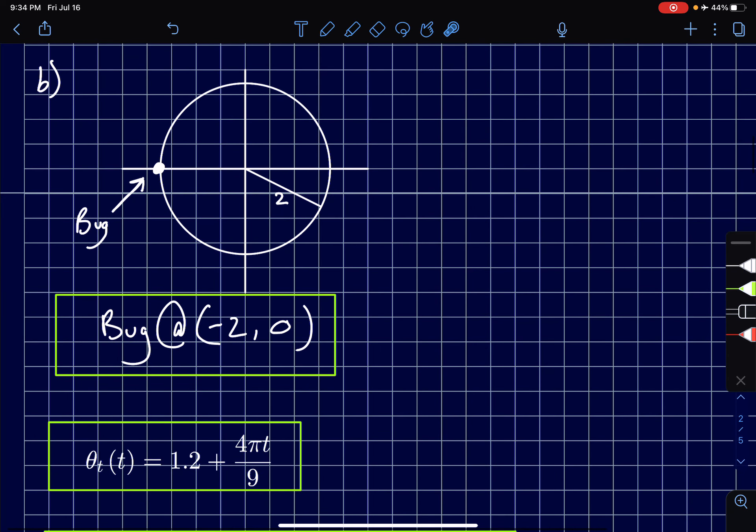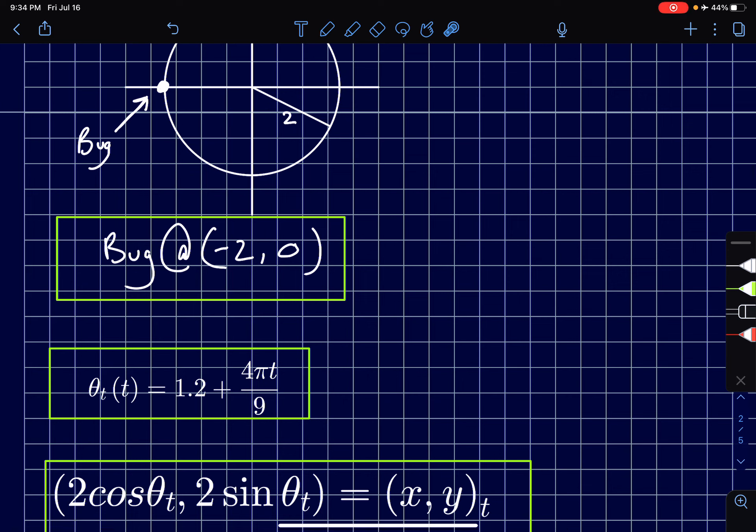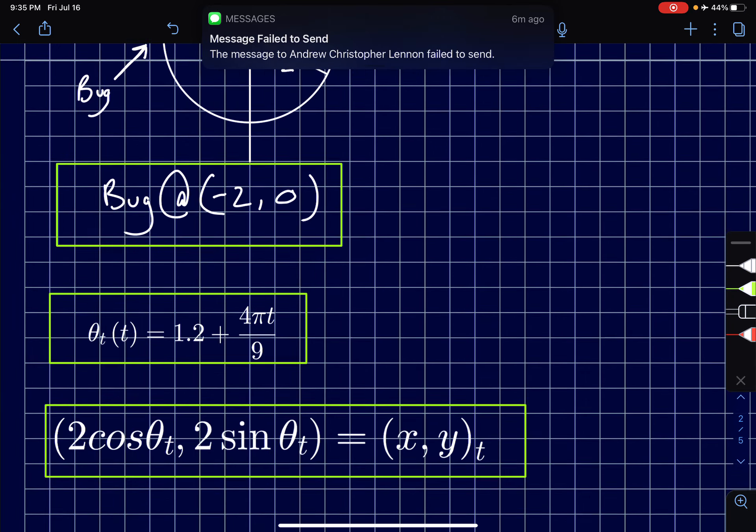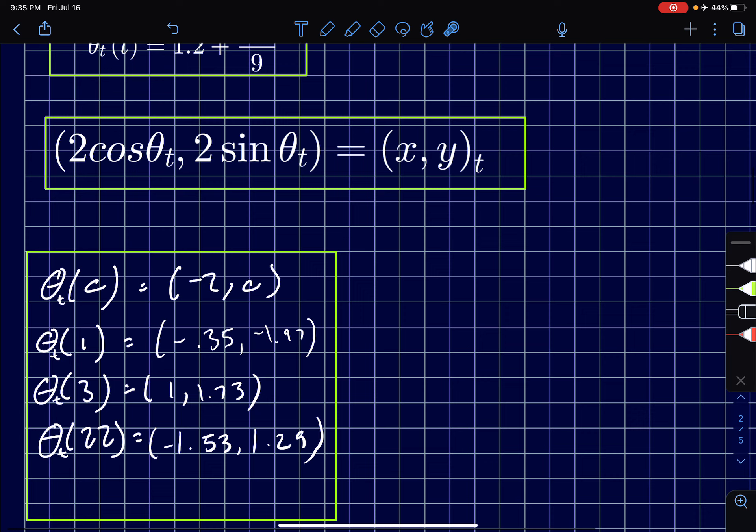For part b we have to do the same thing except this time instead of it giving us a starting position of 1.2 radians, it just tells us the starting position is at this point right here. We can see that it's on the y-axis and since we have a radius of 2 we know that it starts at (-2, 0). We use the same formula except now the starting position is 1.2 and the angular speed is the same. This part stays the same. We plug in our 0, 1, 3, and 22 for t and we get these answers right here.